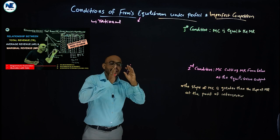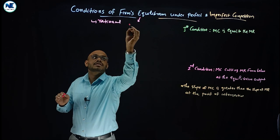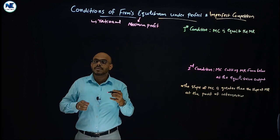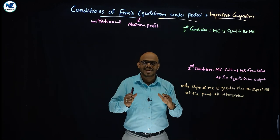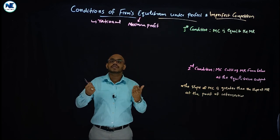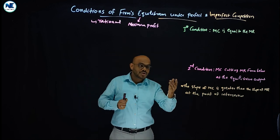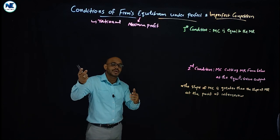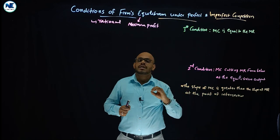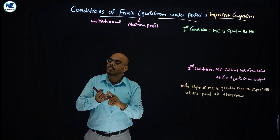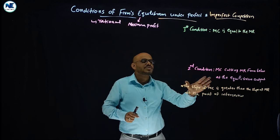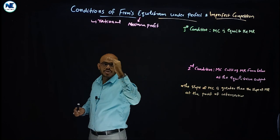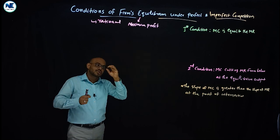A firm's equilibrium represents an output level that will ensure maximum profit. This is very important. Just as a consumer is in equilibrium when they get maximum satisfaction or utility, similarly, a firm achieves equilibrium. We will consider this under perfect competition as well as imperfect competition, such as monopoly and monopolistic competition.